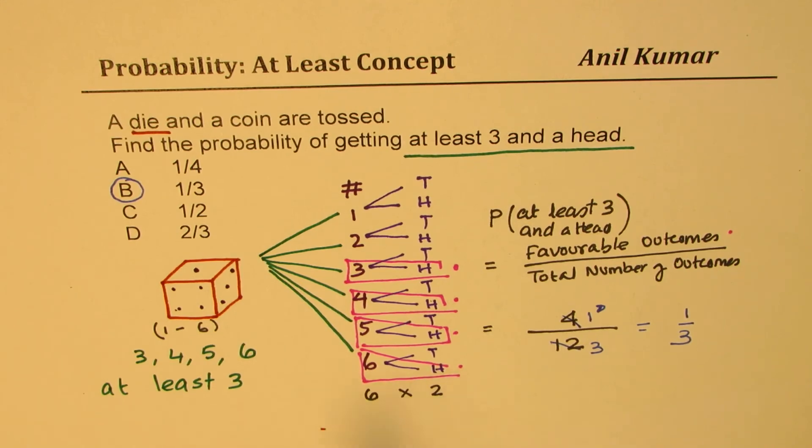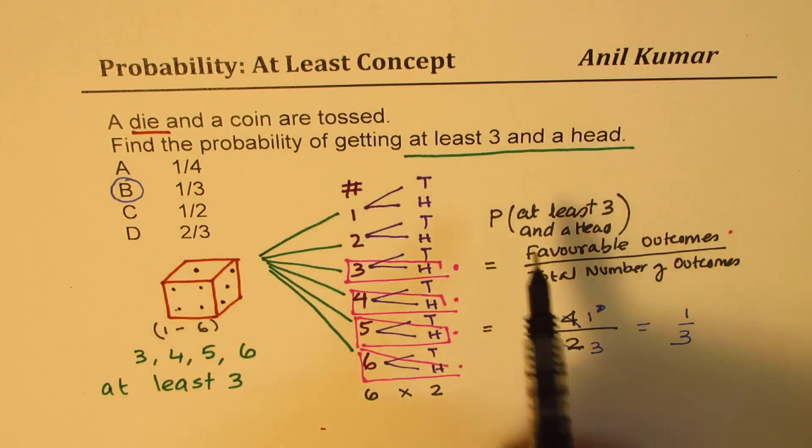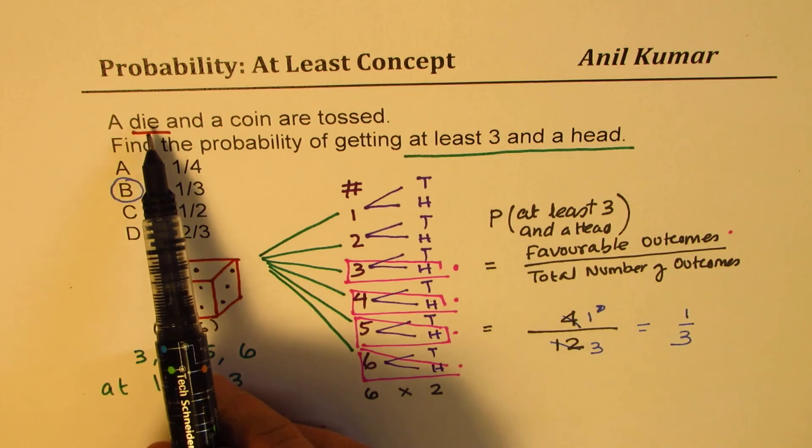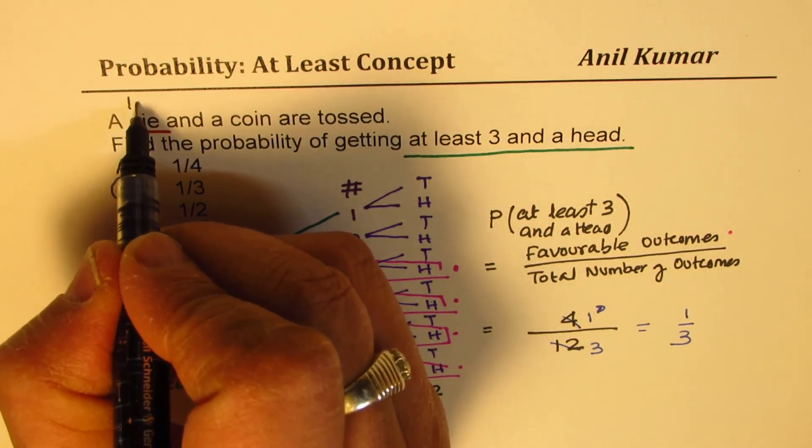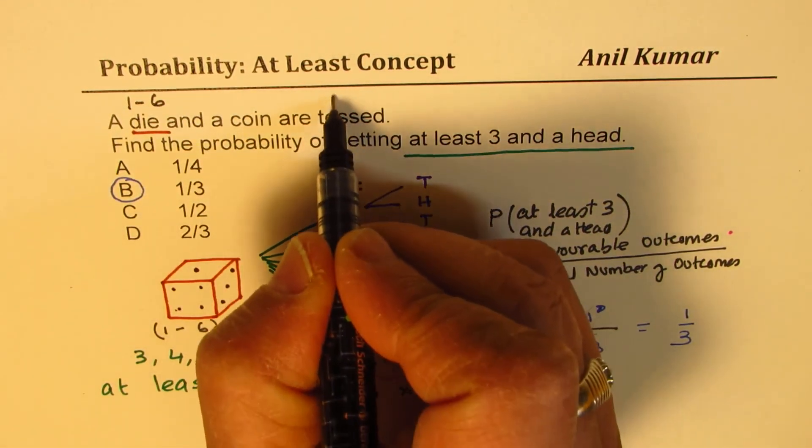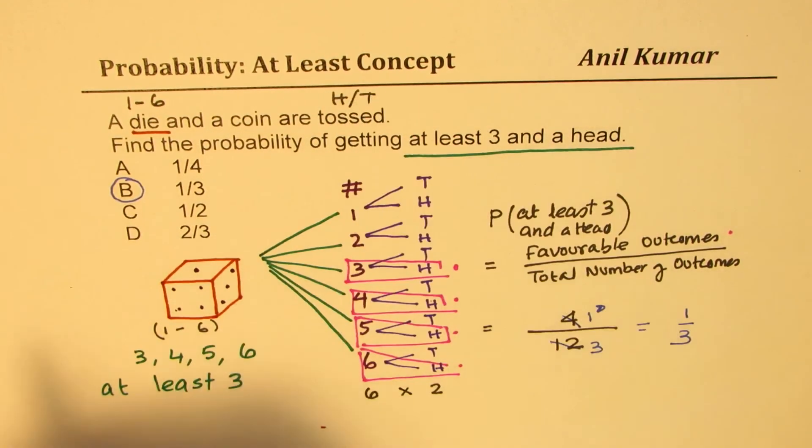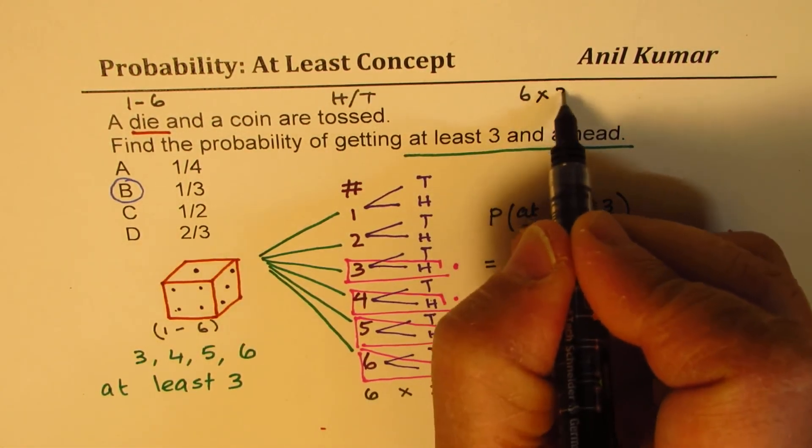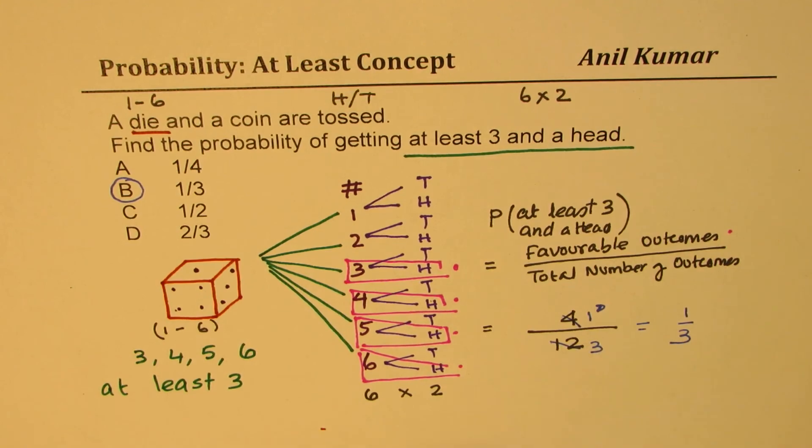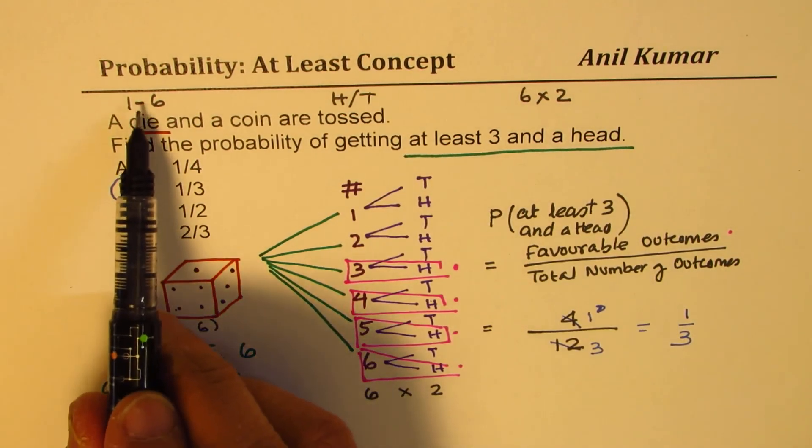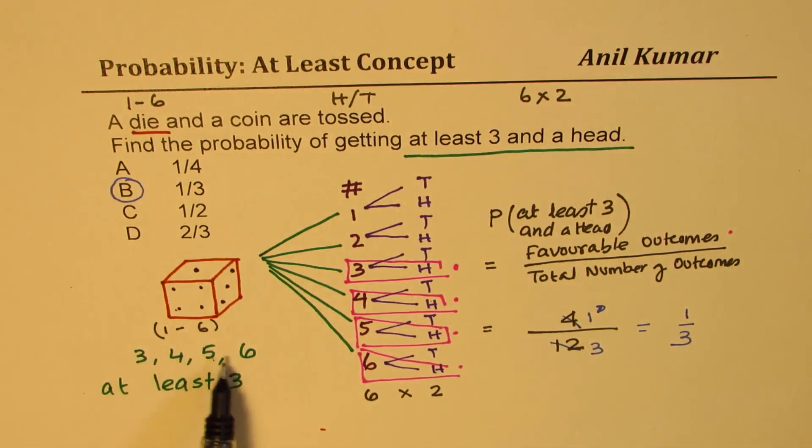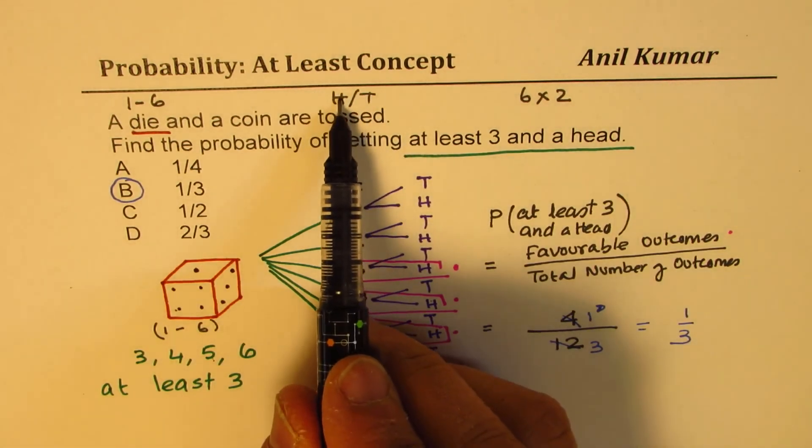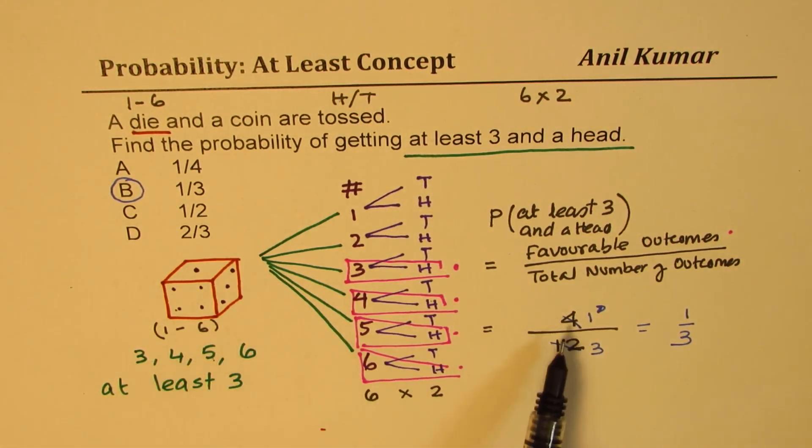If you get this question in a multiple choice question test, then what you need to do is straight away: you know they have dice which has possibility of one to six, a coin head or tail, so two options. Total is six times two, that comes in the denominator. Favorable outcomes - the numbers are three, four, five, and six, and from here only one, so four times one comes in the numerator. Four over twelve or one over three is your answer.